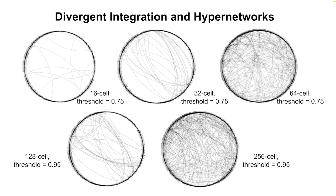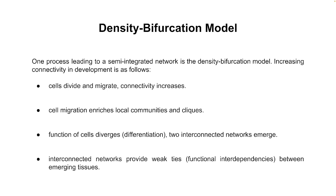Hypergraphs are very different from regular networks and allow us to capture changes in functional category. Hypernetworks take nodes and combine them into a hypernode — grouping, say, AB cells together as a category, then looking at connections between hypernodes. This gives a power spectrum of relationships: you take a bunch of cells, put them in a hypernode, treat them as a group, and get a distribution of connection changes. But before moving to that model, we need to discuss the density bifurcation model.